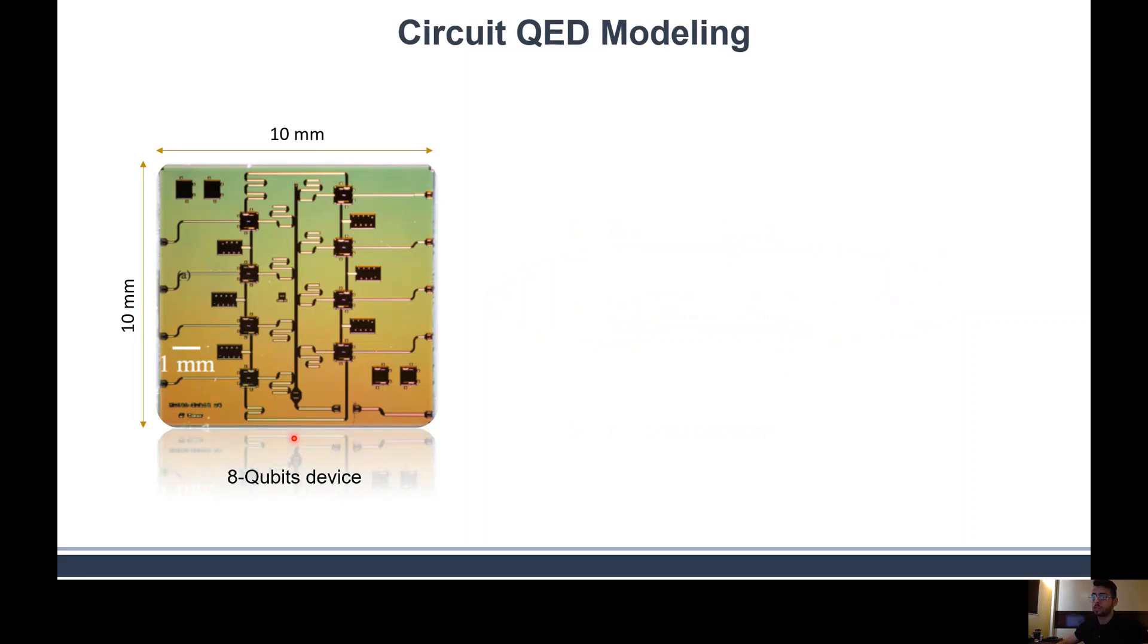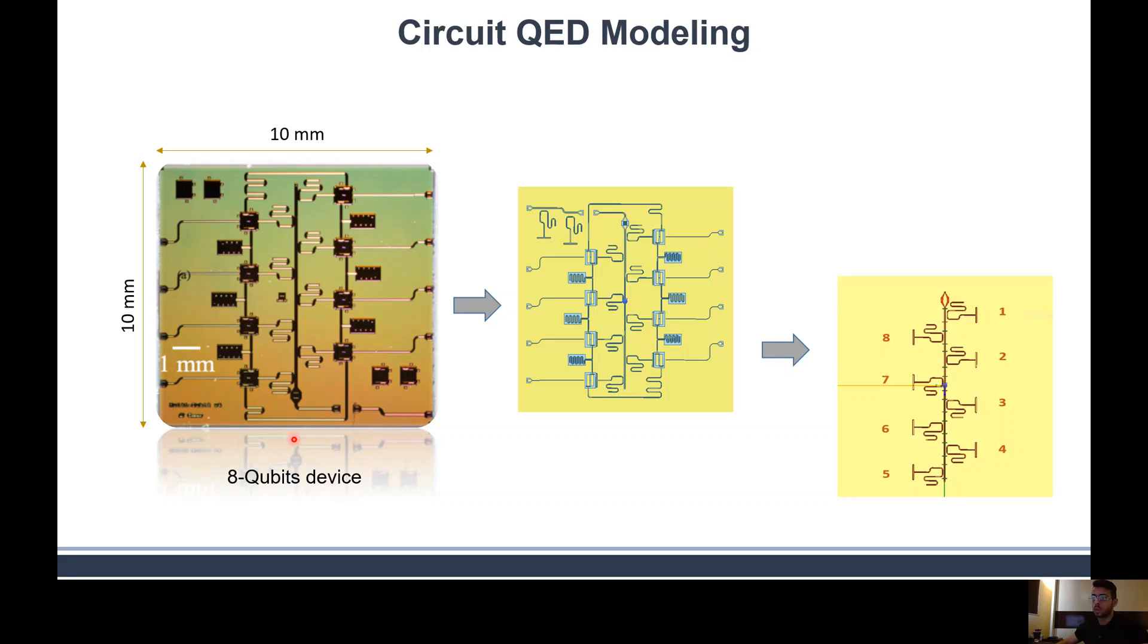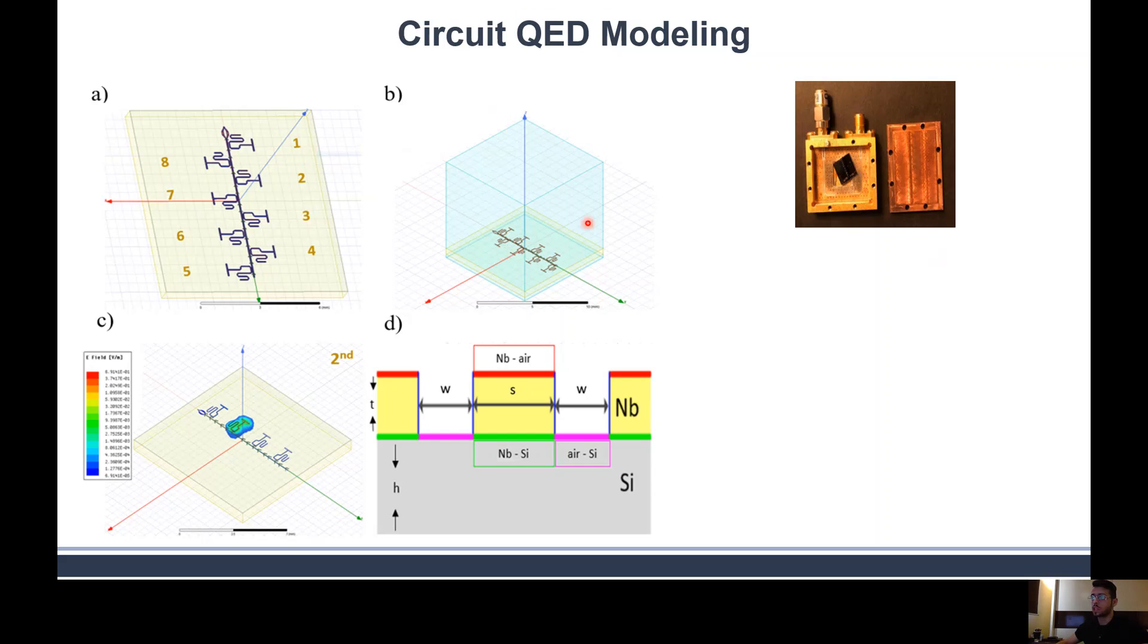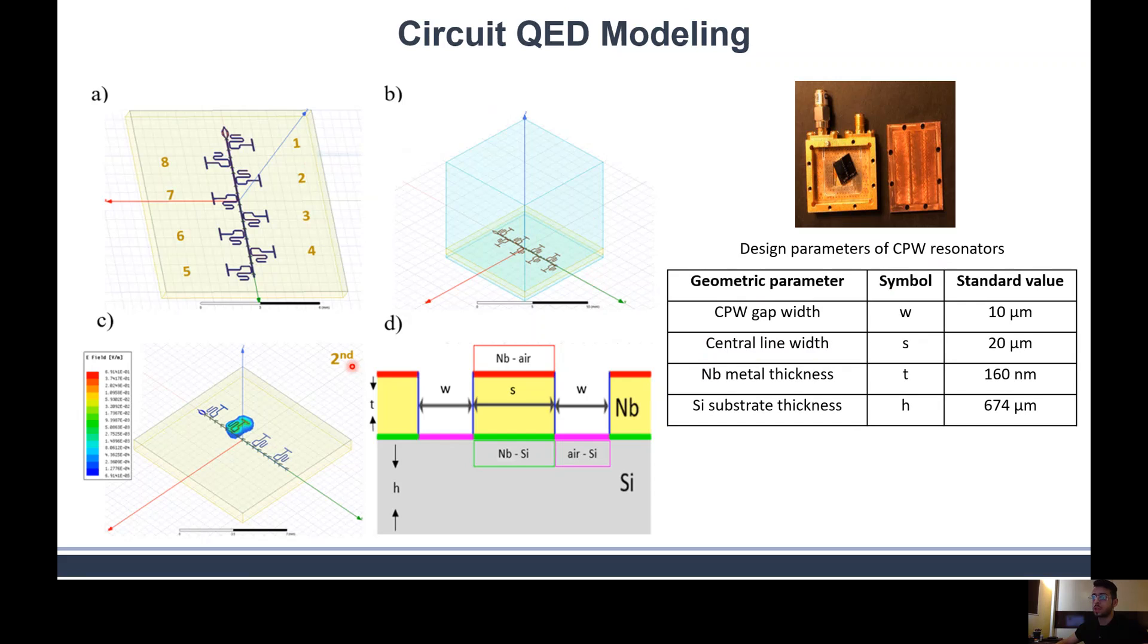We can start by modeling the CPW resonators alone because their improvement can be extended to the improvement of the chip. If we know how to remove defects in these resonators, we know how to generalize that to the qubits. Here we see in figure A, eight resonators put in finite element simulation to simulate their performance for many cases. Figure B shows the simulation to the actual sample box and the chip. Figure C shows excitation of a single resonator in the device, and figure D shows the geometric parameters of the device.